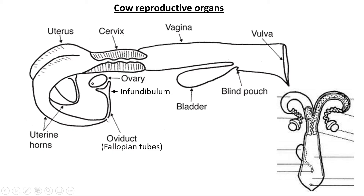So the egg cell meets the sperm cell in that area. To summarize from the top view: we have the two ovaries, the infundibulum holding the ovaries, the fallopian tube, the uterine horn, the uterus, the cervix, the vagina, and the vulva at the back. The diagram also shows where the bladder is situated — looking from the top down, the bladder is visible sticking out at the bottom.